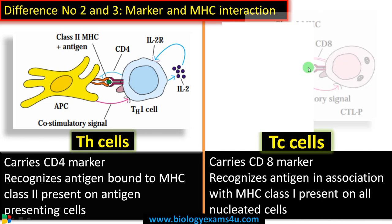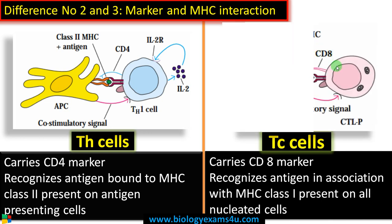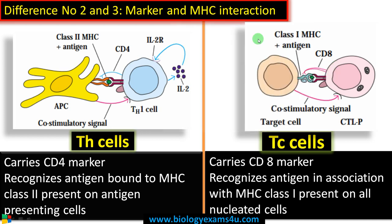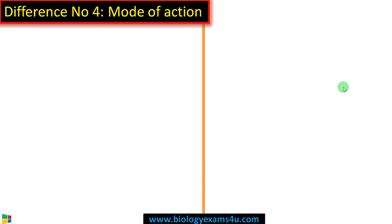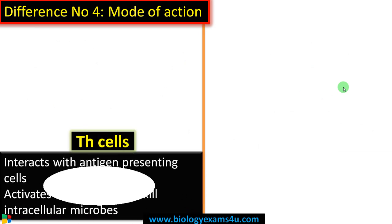In the case of T cytotoxic cells, they carry a co-receptor called CD8 — a glycoprotein similar to CD4. TC cells recognize antigen that is in association with MHC class 1 receptor. Since MHC class 1 is present on all nucleated cells, any infected cell can process an antigenic peptide and present it on MHC class 1, which is directly recognized by T cytotoxic cells.